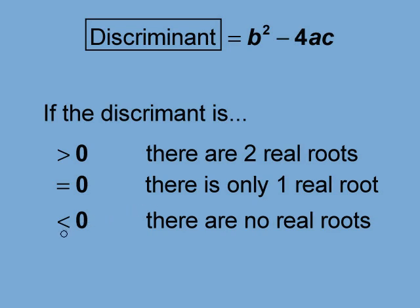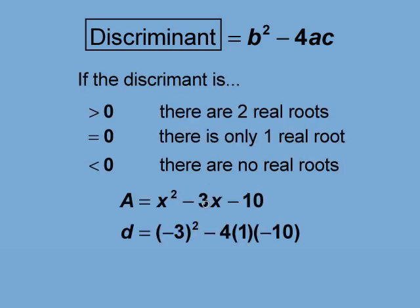But if the discriminant has a value less than zero, then the quadratic has no real roots. Let's calculate the discriminant for our quadratic. The b value of negative 3 goes here. The a value of 1 goes here. And the c value of negative 10 goes here.